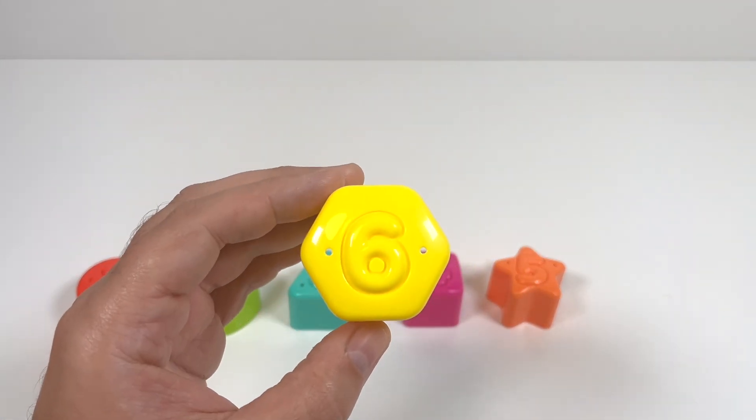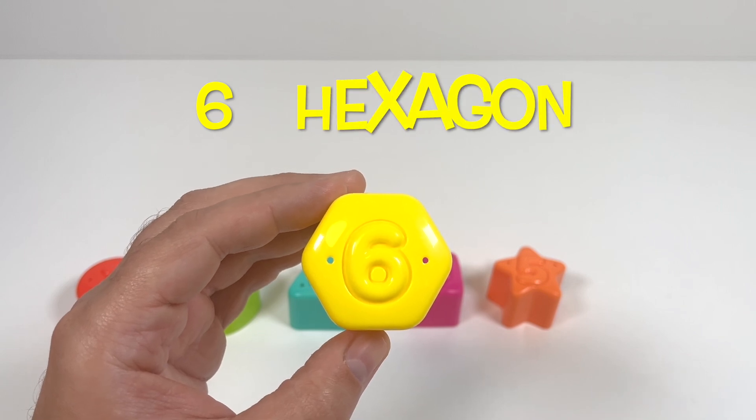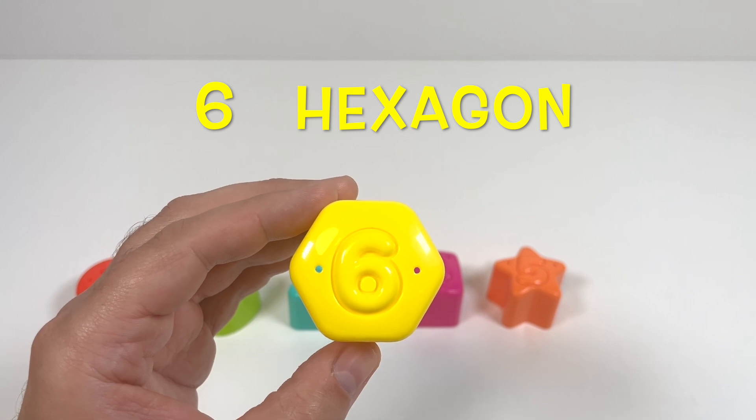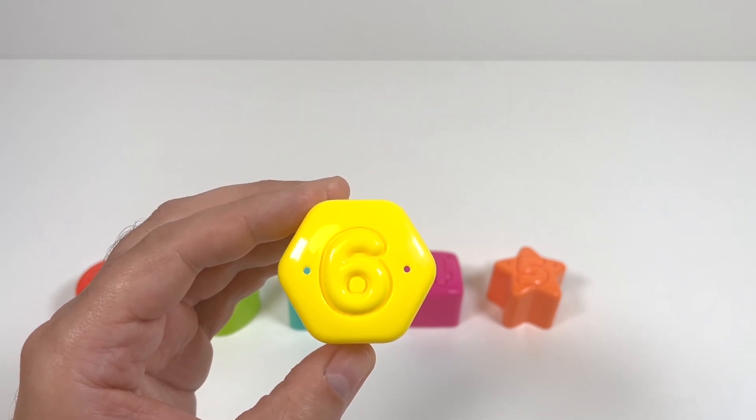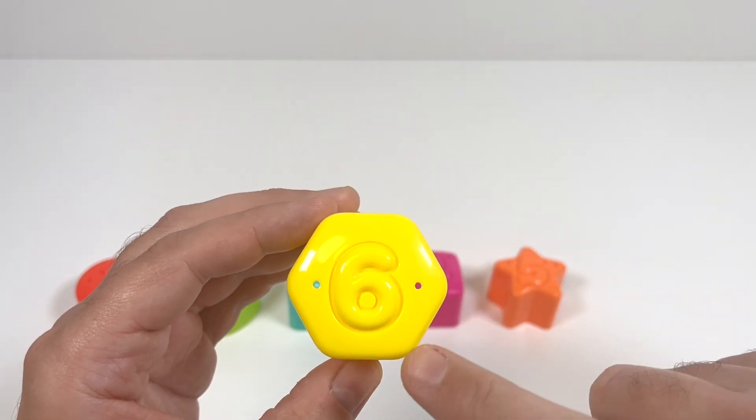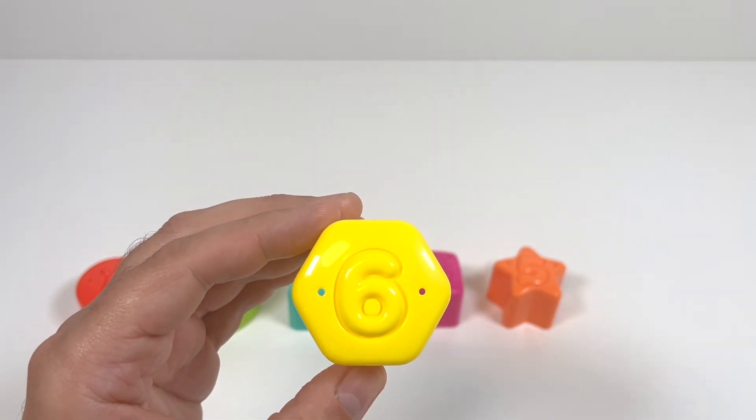Finally, number 6 is a yellow hexagon. A hexagon has 6 sides. We can count them. 1, 2, 3, 4, 5, 6. Yeah, a yellow hexagon.